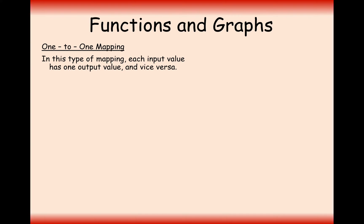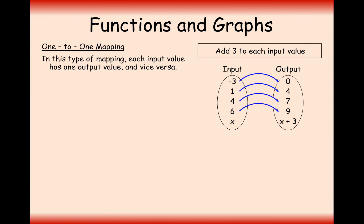Let's first have a look at the one-to-one mapping types. In this mapping type, each input value has one output value, and vice versa. Let's take the mapping of adding three to each input value. No matter what value is in your set of input numbers, your output numbers are just going to be three bigger. For example, minus three will go to zero, six will go to nine, etc.